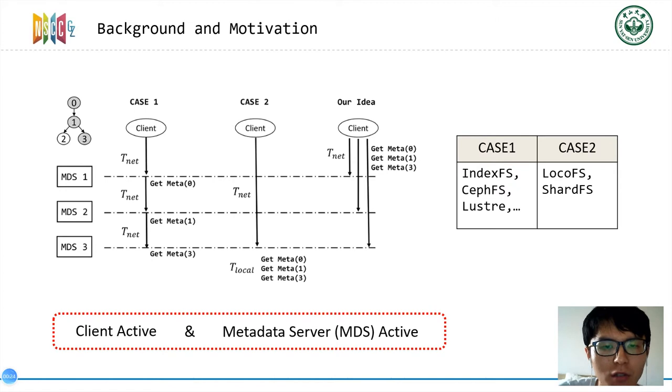Metadata management is very important in file systems. Path resolution is a basic operation in metadata processing. We classify distributed file systems into two types according to the execution method of path resolution: client active and metadata server active. Case 1 is client active, case 2 is metadata server active.